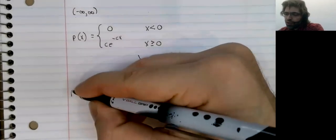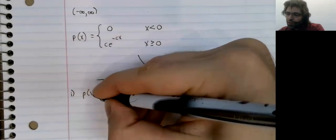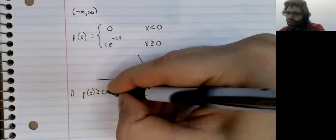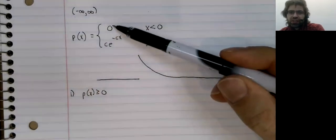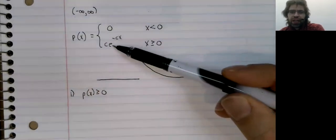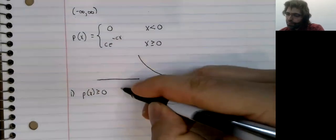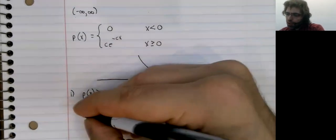What do we need? Well, we need this to never be negative. And zero isn't negative, and an exponential function isn't negative. So check, got that.